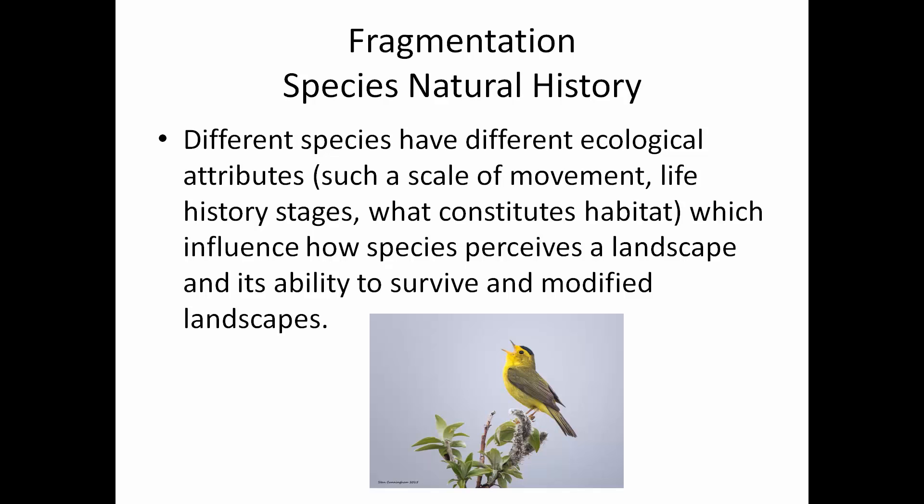Species' natural history matters. The Wilson's warbler can move very easily between patches — the matrix habitat doesn't need to be as good. But this species is migratory. I photographed one in Alaska; it probably wintered in Central or northern South America and needed patches all along that flight. If those patches are gone, the species may decline. This is happening to neotropical birds — birds that nest in North America and winter in Central and South America — many are declining because patches are disappearing not just in nesting or wintering areas, but along the route.